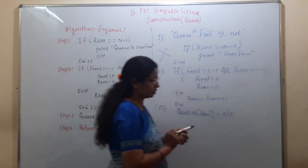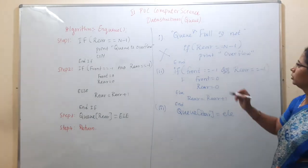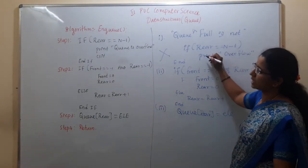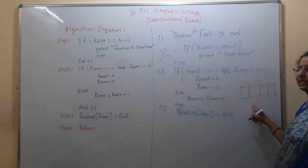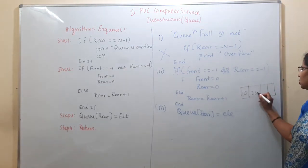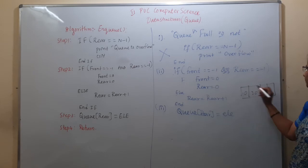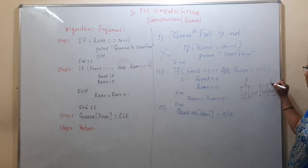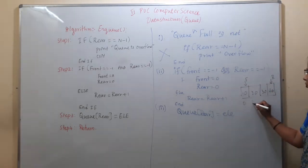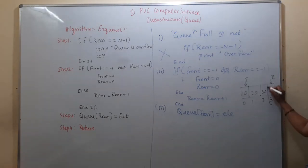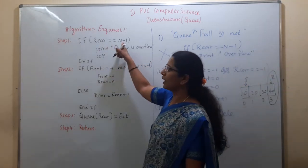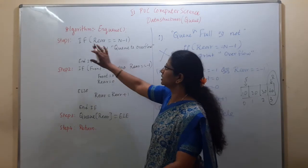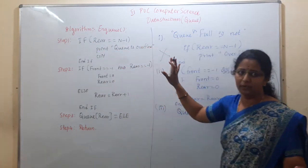Let's trace through: queue size is 4, elements 10, 20, 30, 40 are present at positions 0 through 3. Front is at 0 and rear is at 3, which equals N minus 1. So the condition rear equals N minus 1 is true — it will display the overflow message and stop the procedure.